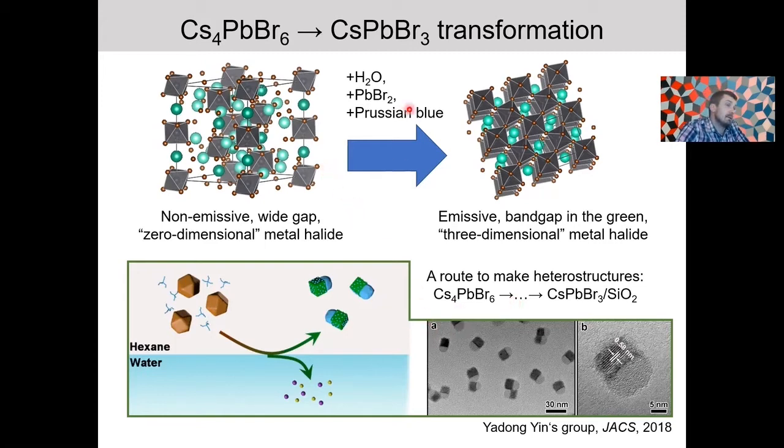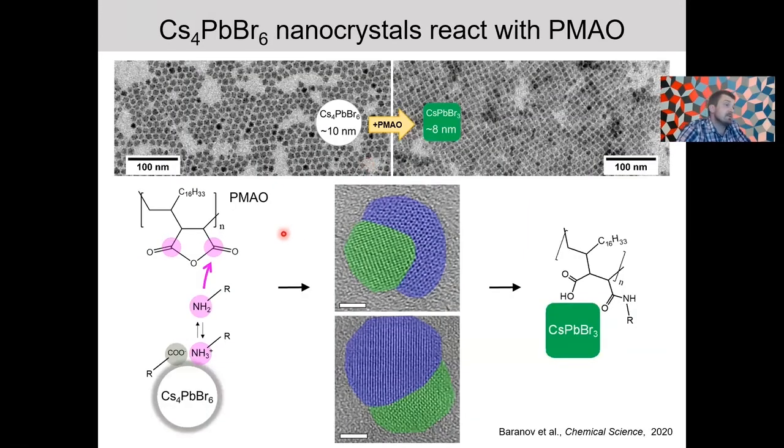However, these chemistries result in a very fast interconversion between zero-dimensional and perovskite nanocrystals, so it's pretty much impossible or very difficult to capture intermediate and gain insight into their mechanism. So to circumvent this, we devised an approach that involves a much milder transforming agent.